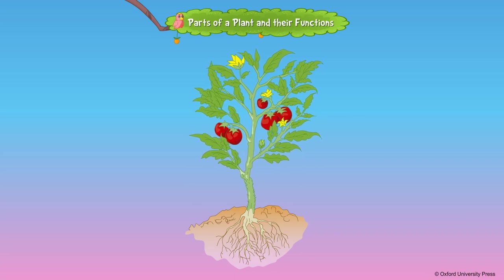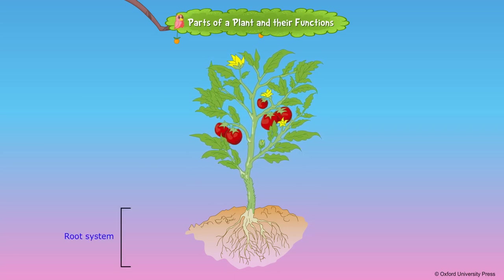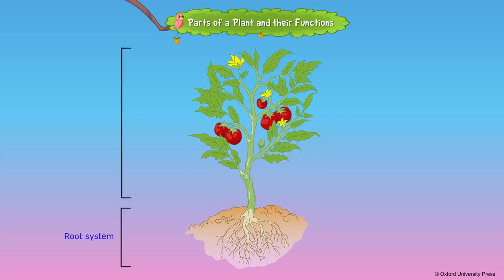A plant has two main parts. The part that grows under the ground is called the root system. The part that grows above the ground is called the shoot system.